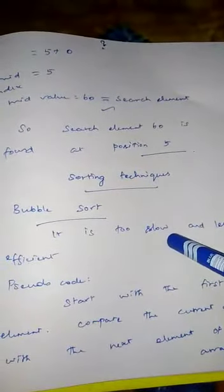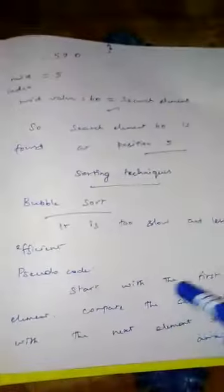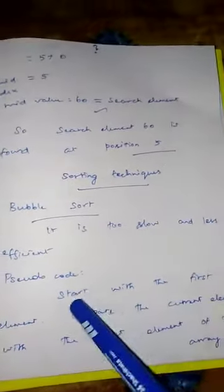Bubble sort is too slow — it works very slowly and is less efficient. Now let us see the pseudo code. Start with the first element. Compare the current element with the next element of the array. If the current element is greater than the next element, swap them. If the current element is less than the next element, move to the next element — it is correctly in order. Go to step one and repeat until the end of the array.